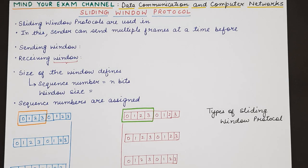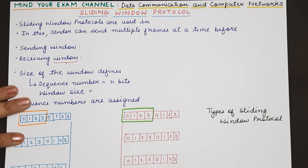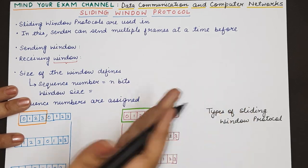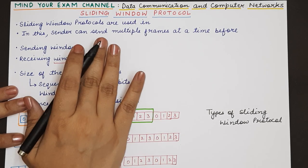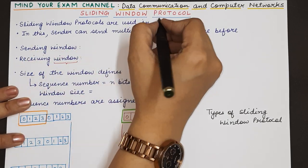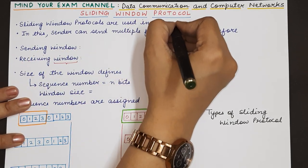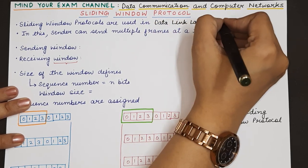Hello everyone, welcome back to my channel Mind Your Exam. In this video, we will be studying about the sliding window protocol. The sliding window protocol is another form of data link layer protocol and coincidentally, it is also used at the transport layer. We have previously studied the stop and wait protocol, and this is the second type of protocol we are studying. Sliding window protocols are used in the data link layer as well as in the transport layer.